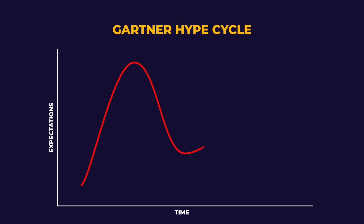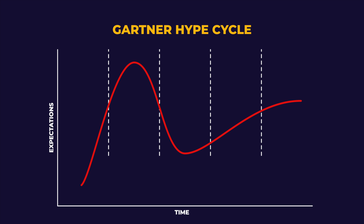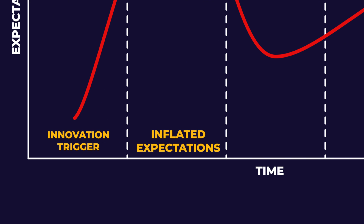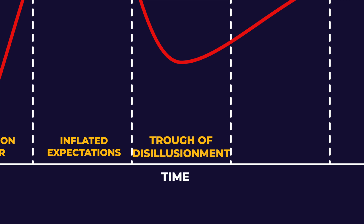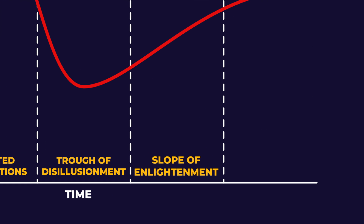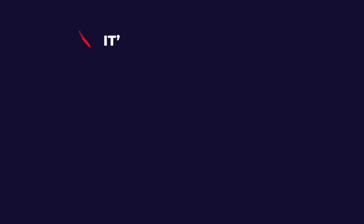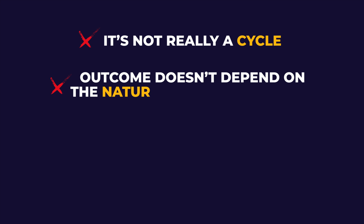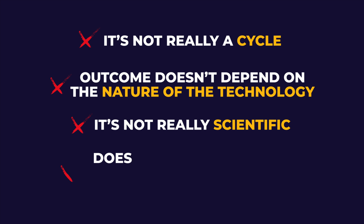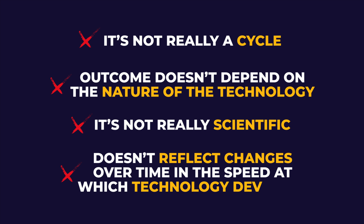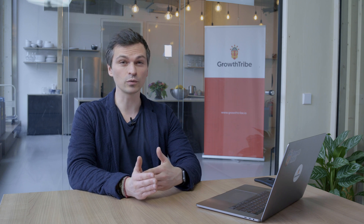Another interesting but often highly criticized graph is the Gartner Hype Cycle — a graphical representation of the maturity, adoption, and social application of specific technologies. Technologies go through five phases: the innovation trigger, the peak of inflated expectations (where most of the hype is), the trough of disillusionment (like a bad hangover), the slope of enlightenment (the recovery), and the plateau of productivity, when the technology has been adopted — the golden age. This hype cycle has been widely criticized: it's not really a cycle, it's not scientific, and it doesn't reflect changes in the speed of technology development. But it's still a powerful mental model.